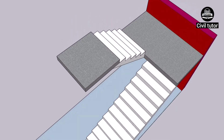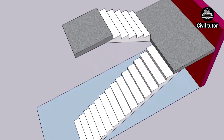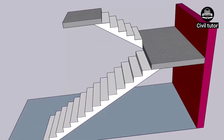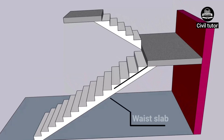The horizontal platform which is provided between two successive flights in a staircase is known as landing. Flight is the continuous series of steps without any break between landings or between landing and flooring. The thickness of the slab which is provided to support the steps is known as waist slab.